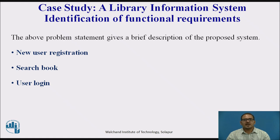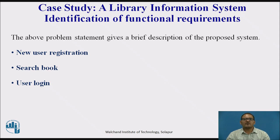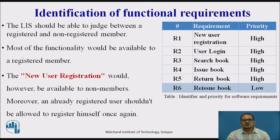Search book: any member of the library information system can use this facility to check whether a particular book is present in the library. A book can be searched by its title, author name, or publisher's name. User login: a registered user can log into the system by providing his employee ID and password as set during registration. Most functionality is available to registered members, while new user registration is available to non-members.